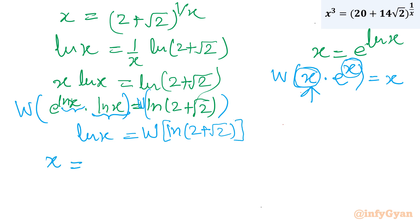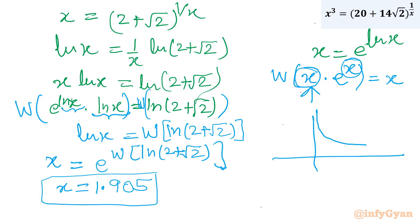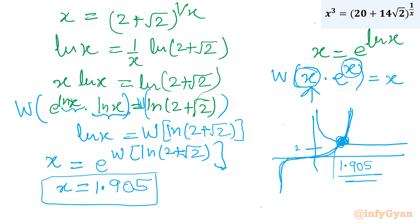Checking with Wolfram Alpha, x comes out to approximately 1.905. On the graph, the intersection of the RHS exponential curve and the LHS cubic x³ occurs at x ≈ 1.905. I hope you liked this video — thank you so much for watching. Don't forget to like, share, and subscribe. Bye till the next video!